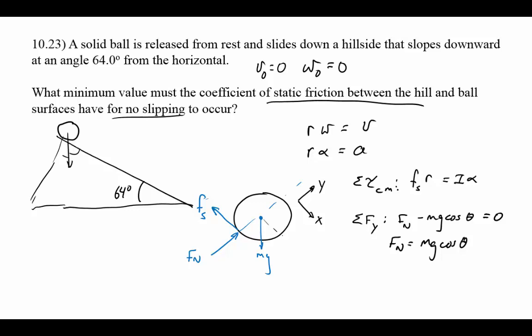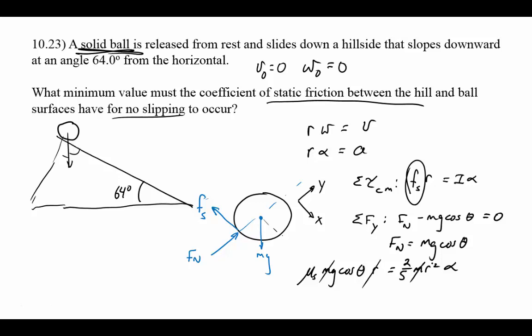Substituting back into the torque equation: mu static times mg cosine theta times R equals two-fifths mR squared times alpha. The masses cancel, and one R cancels, leaving mu S g cosine theta equals two-fifths R alpha. Since r alpha equals a, this gives mu S equals two-fifths a divided by g cosine theta.